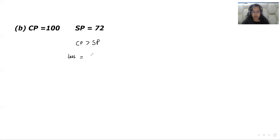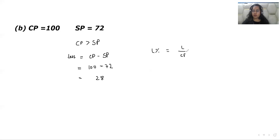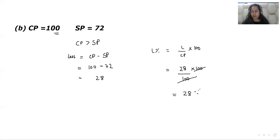The formula for loss is: CP minus SP — cost price minus selling price. Cost price is 100 and selling price is 72, so 100 minus 72 gives us a loss of 28. Now applying the formula of loss percentage: loss over CP into 100. Everything is based on CP. So loss is 28 and cost price is 100 — multiply by 100, eliminate 100 with 100, and we get 28 percent. We have a loss of 28 percent.